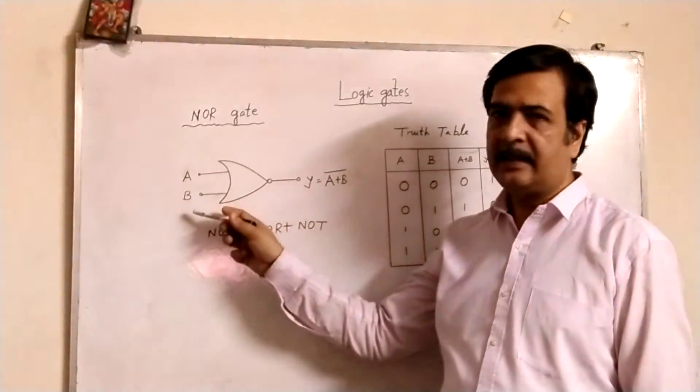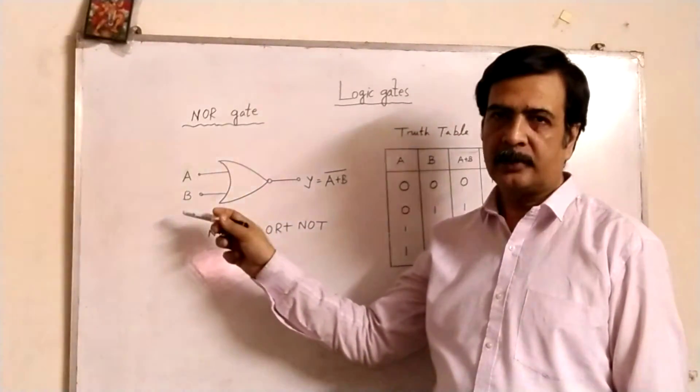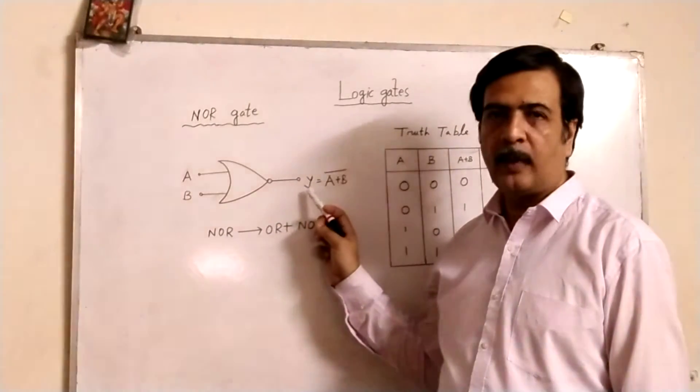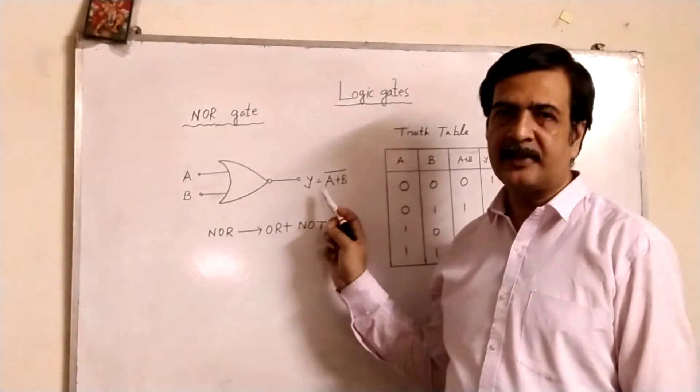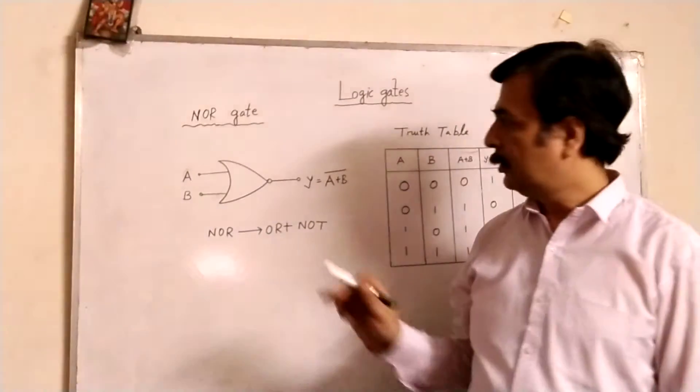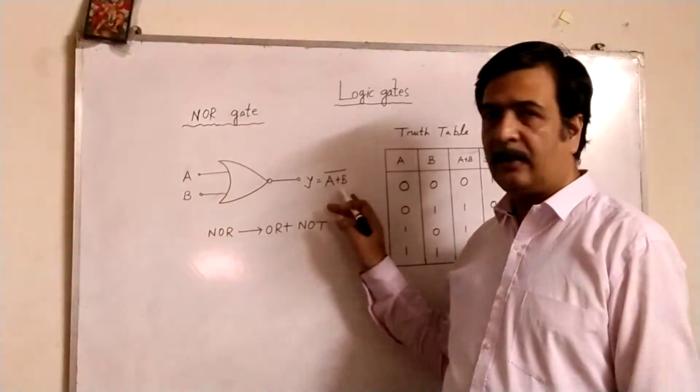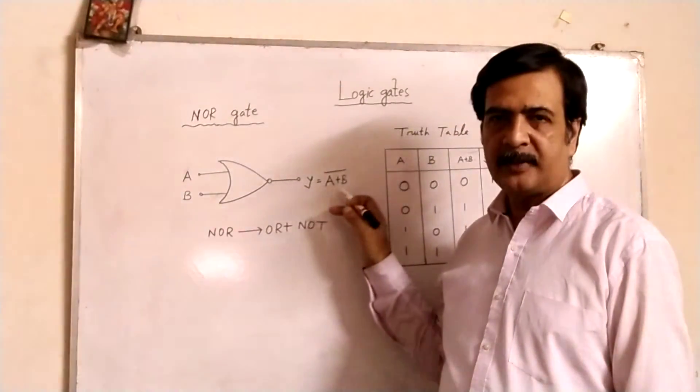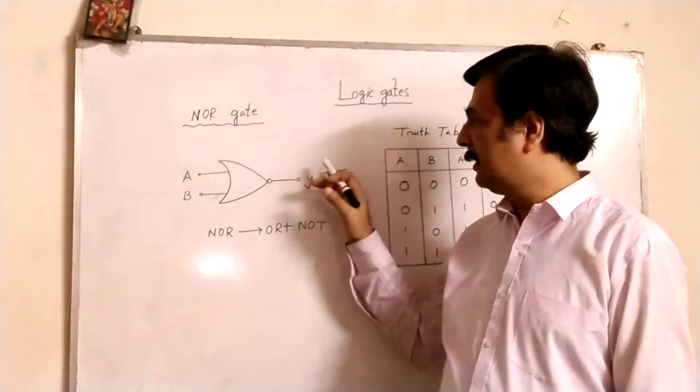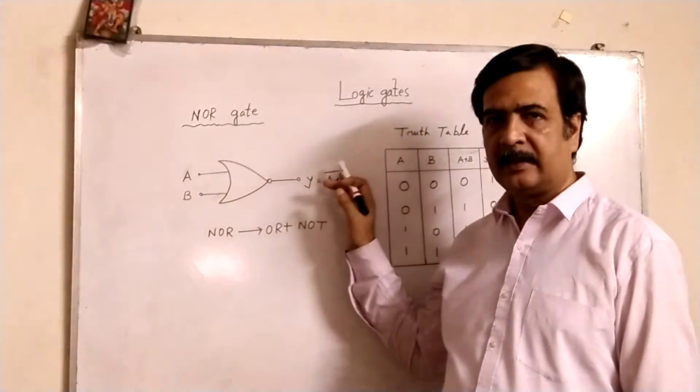Now, A and B are the inputs and output Y is equal to A plus B inversion. So, if it would be only OR, it would be A plus B and with that the inverse operation is there.